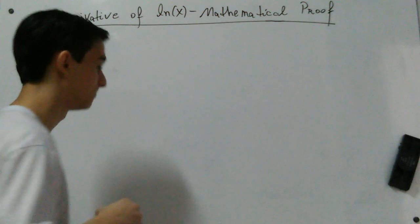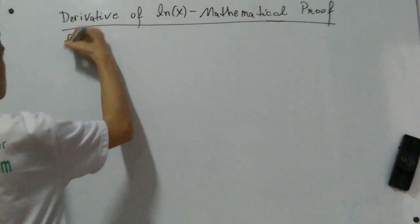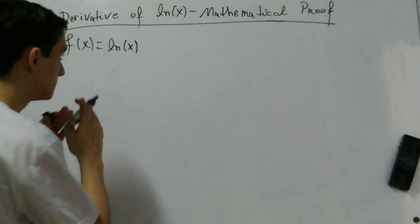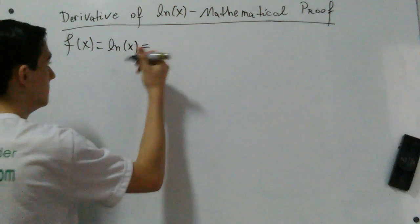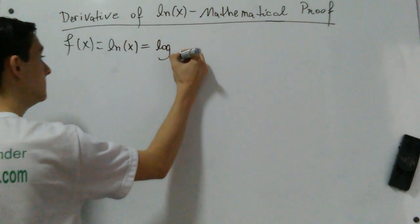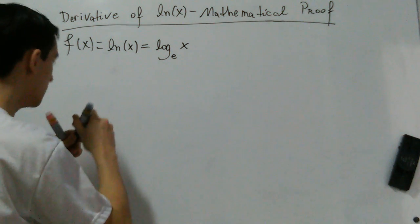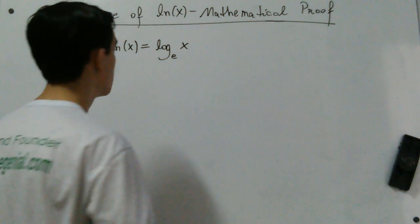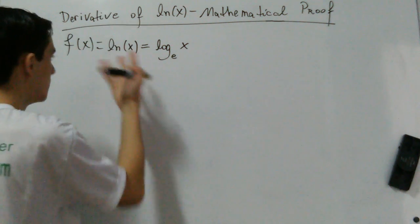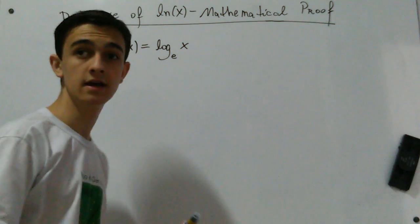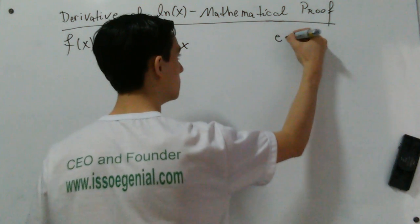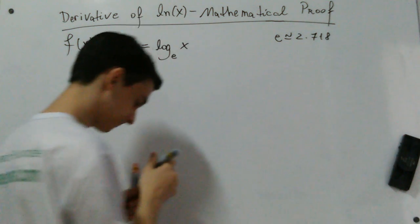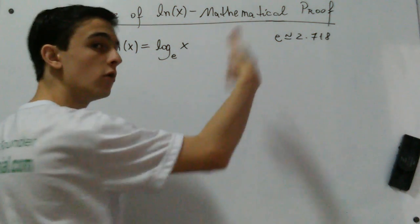Just remembering, we have a function f equal to natural log of x. This natural log is the same as the log base e of x. When we have a logarithm base e, we call it natural log. This e is a mathematical constant, approximately 2.718 and it continues. It's also called Euler's number.